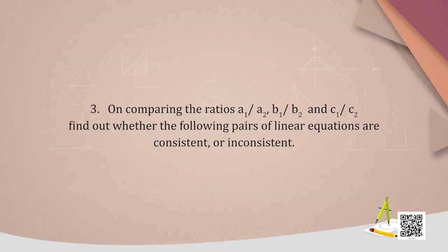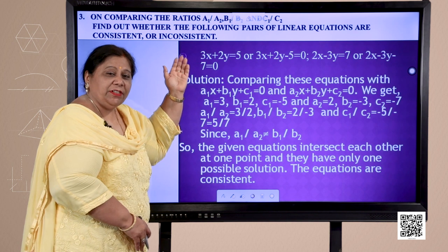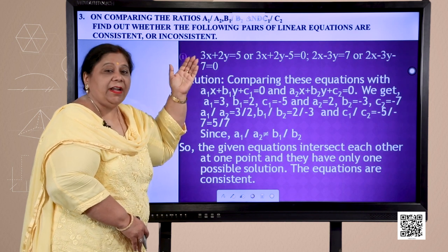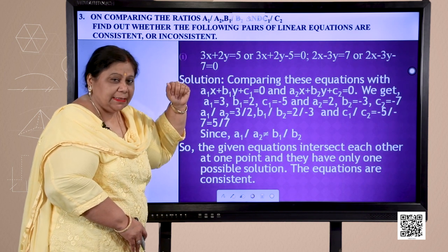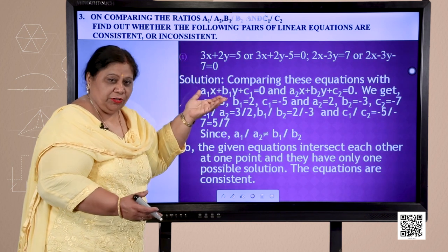On comparing the ratios a1 upon a2, b1 upon b2, and c1 upon c2, find out whether the following pairs of linear equations are consistent or inconsistent. Consistent we say when the pairs of equations have unique solution or infinitely many solutions, and we call them inconsistent when they have no solution.